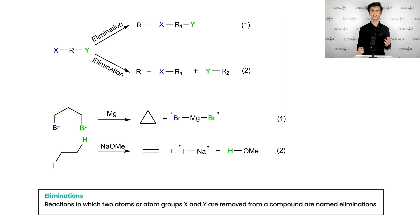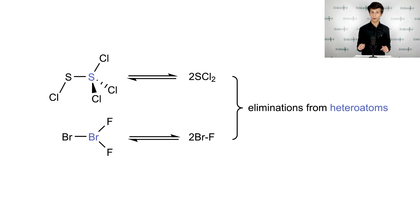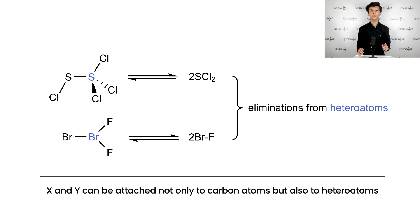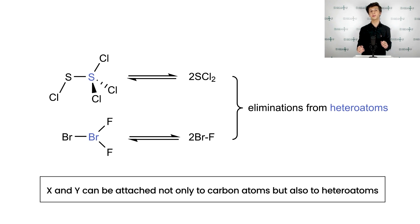Elimination of two bromine atoms from 1,3-dibromopropane mediated by magnesium illustrates the first general mechanism, whereas the hydrohalogenation of iodoethane represents the second one. Furthermore, X and Y can be attached not only to carbon atoms but also to heteroatoms. Carbon atoms in turn can be sp3 or sp2 hybridized. However, in this course we will consider only sp3 hybridized carbon, as such eliminations are way more popular in organic chemistry.